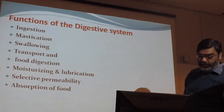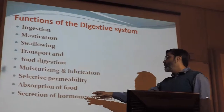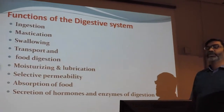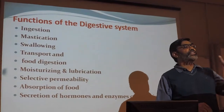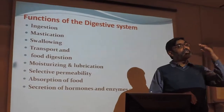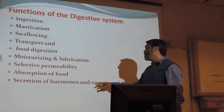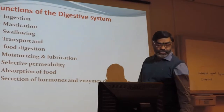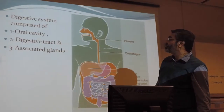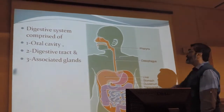Absorption is again a function of the intestine. Secretion of hormones and enzymes is a function of the gastrointestinal tract. There are a lot of cells and enzymes coming for digestion, and a lot of hormones coming from the mucous membrane or epithelium of the gastrointestinal tract.